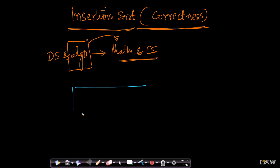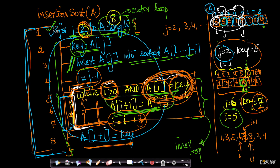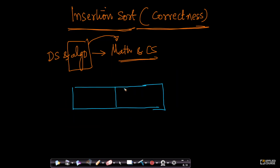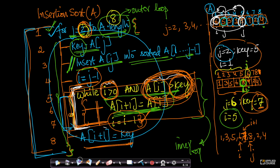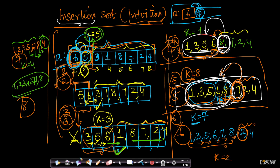This outer loop runs from j equals 2 to A.length. What is insertion sort doing? If I have to explain insertion sort in one line: I take each of the elements one after the other, from the second element to the last element, and I insert this element into a pre-sorted array. That's why the name insertion sort.